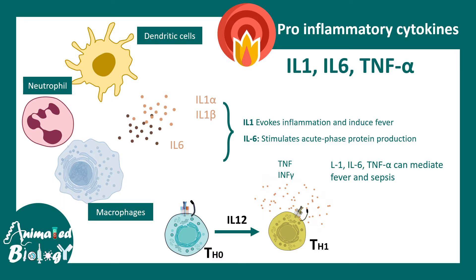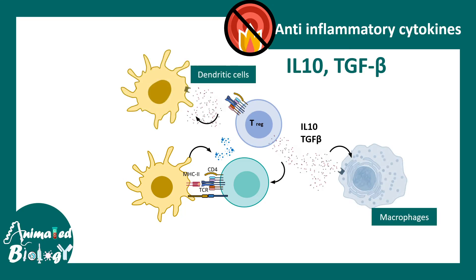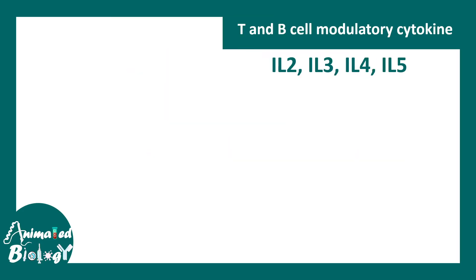At the opposite end are anti-inflammatory cytokines. The hallmarks are IL-10 and TGF-beta. T regulatory cells suppress immune responses by secreting IL-10 and TGF-beta, which are received by macrophages, dendritic cells, or T cells, taming down their responses.